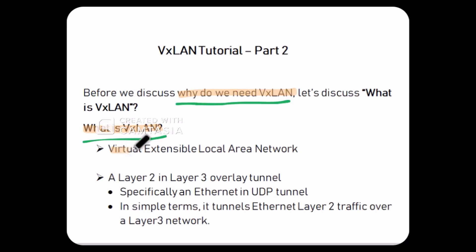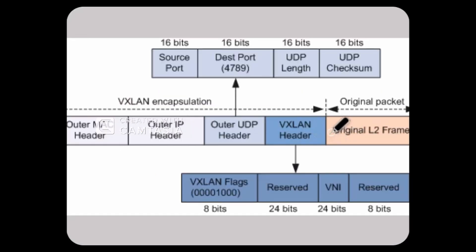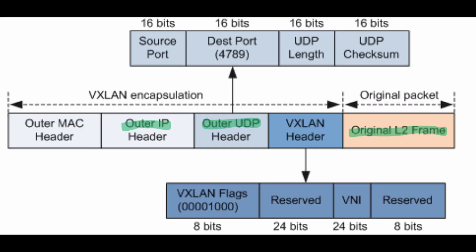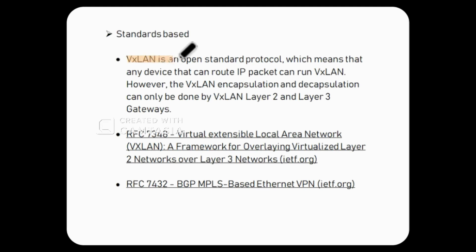VXLAN stands for Virtual Extensible Local Area Network. Ye ek layer 2 and layer 3 overlay tunneling protocol hai. VXLAN ek Ethernet frame ko encapsulate karta hai ek UDP IP packet mein aur layer 3 network ke upar use transmit karta hai. VXLAN ek open standard protocol hai, which means ki koi bhi device jo IP packet route kar sakta hai woh VXLAN ko bhi route kar sakta hai. Lekin VXLAN encapsulation aur decapsulation khali ek VXLAN layer 2 ya layer 3 gateway hi perform kar sakta hai.